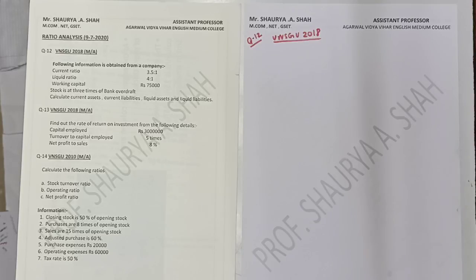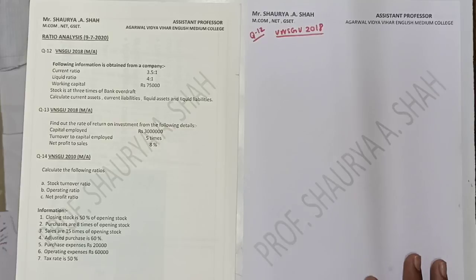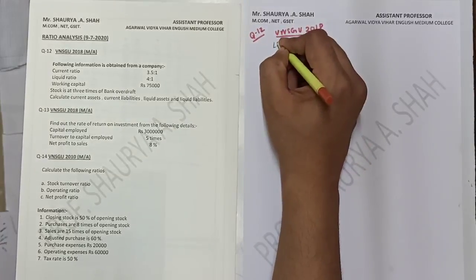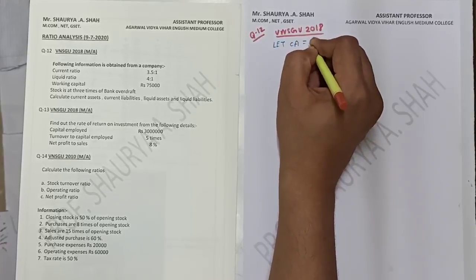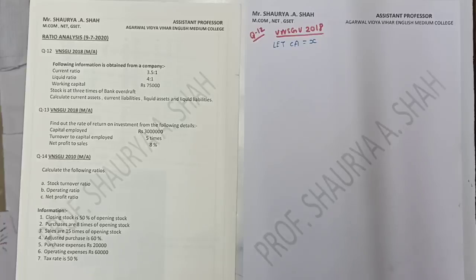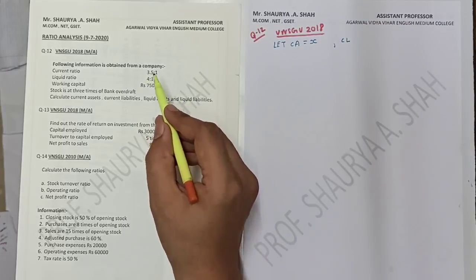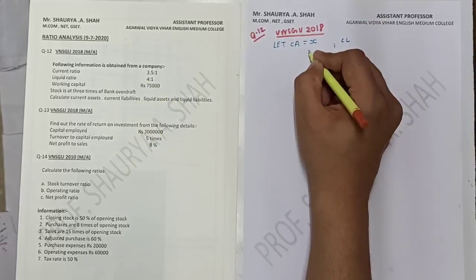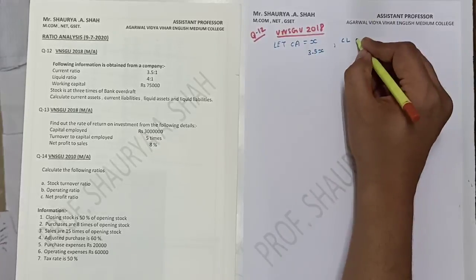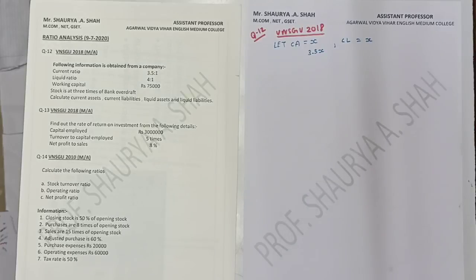Always start with the information which is given in the sum. We'll start with the amount of working capital first. Working capital is current assets minus current liabilities. Before we start, let us assume one of the amounts as x. I assume current assets equals x. So current assets is 3.5x and current liabilities is x, because the current ratio is 3.5 to 1, and we're assuming 1 equals x.